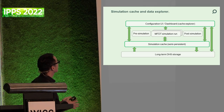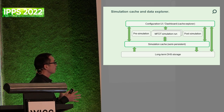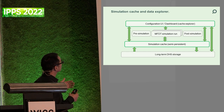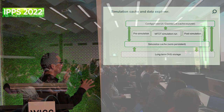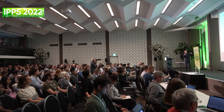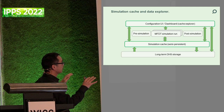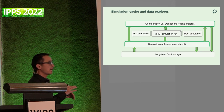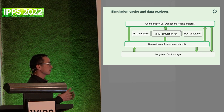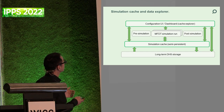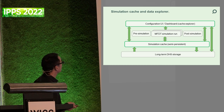One highlight of this program is the system build — the data platform we are building. The idea is to have a configuration user interface where we can configure different models and select model combinations to run. Each model will output state variables to a simulation cache, which is basically physical memory storage. Each model has APIs or functions to access other models' state variables. We also have long-term storage for further exploration. We are close to having a prototype, maybe in a year's time.